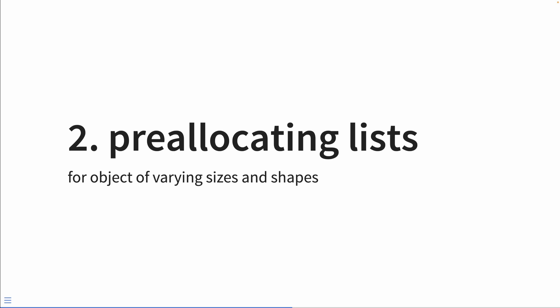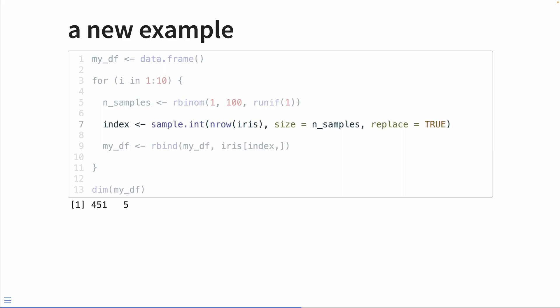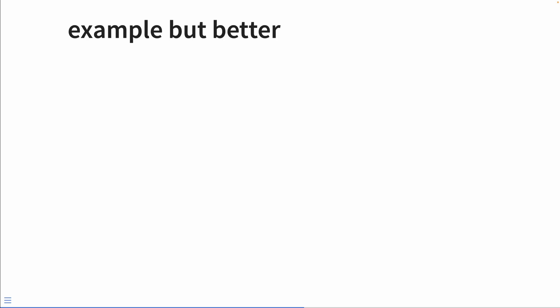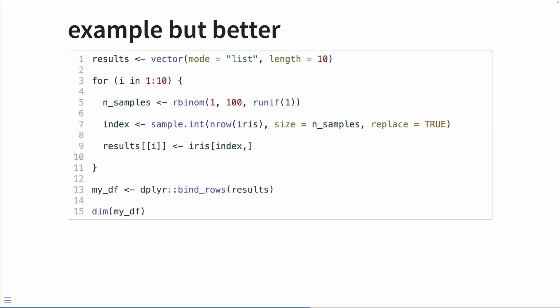Let's revisit that Stack Overflow example — it's a super common use case. We'll take a random number of rows from the iris dataset and append it to an empty data frame 10 times. You might think: if I don't know how many rows I'm going to have, how could I pre-allocate a data frame? Don't do that — use a list instead. Lists are flexible; each element can hold whatever it wants. On each iteration, store the subset into a list, and at the end, combine them using do.call(rbind, ...) or, more contemporary, dplyr's bind_rows() function.